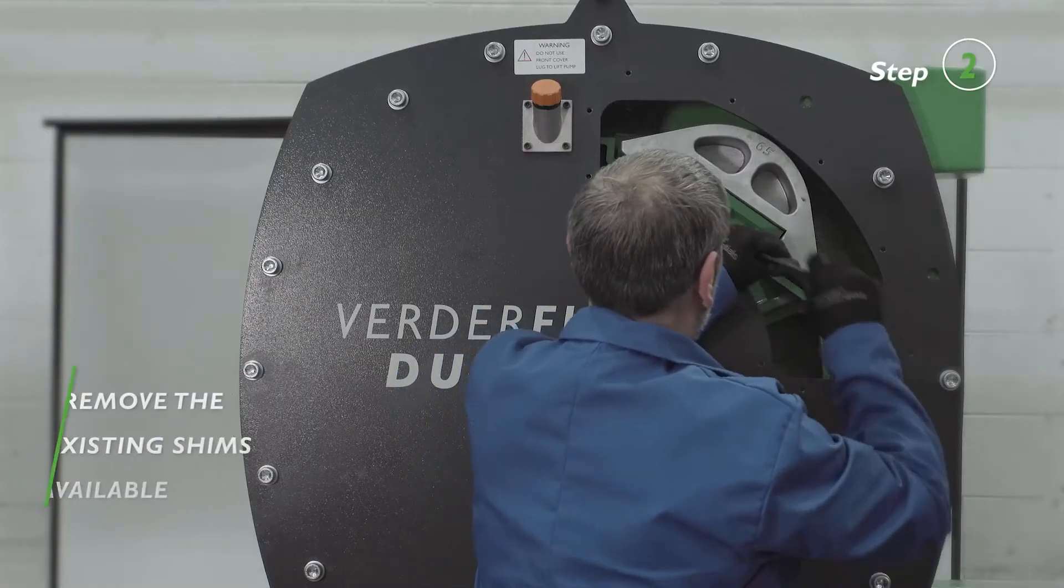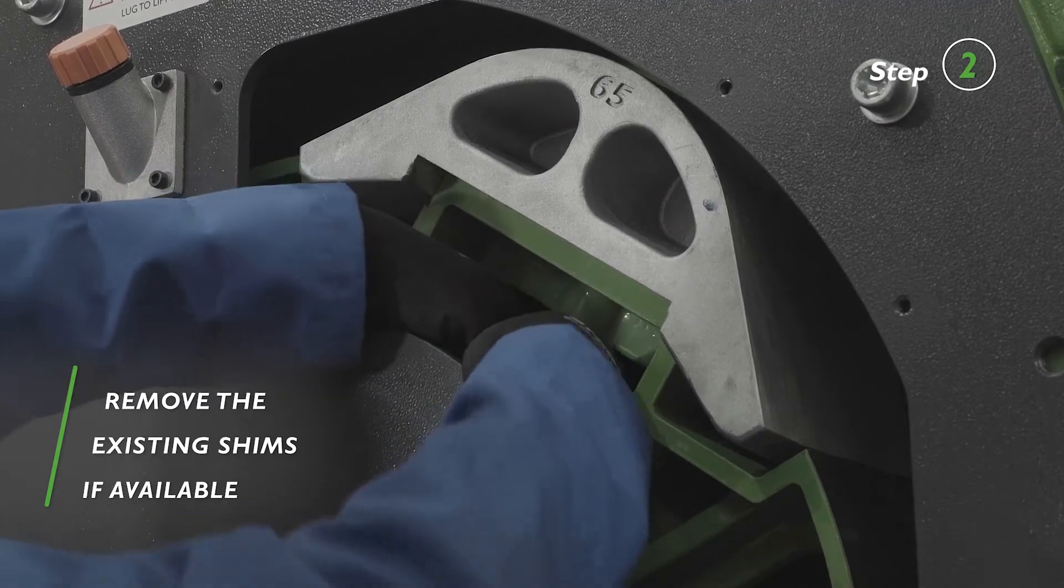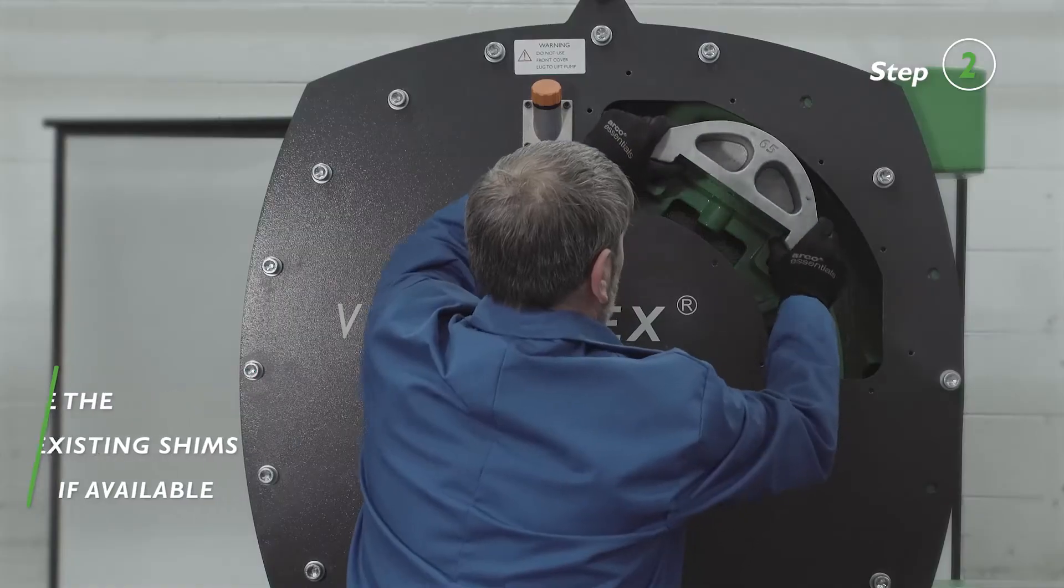Loosen the shoe bolt, then remove the existing shims. Loosen the shoe bolt completely and remove the rotor shoe.